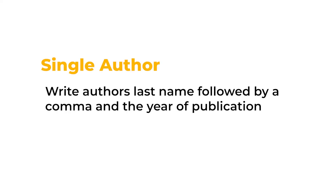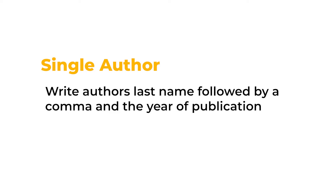For a single author, write the author's last name, followed by a comma, and the year of publication. Example: 'Action Research emphasizes the involvement of teachers in problems in their own classrooms.' You write, in parentheses, the last name of the author, followed by a comma, and the year of the publication.